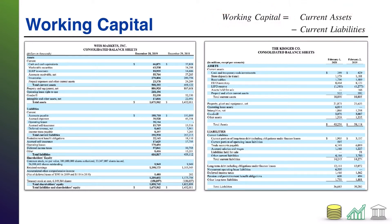So you see the formula over here: current assets minus current liabilities, and that's going to give us our working capital. The name working capital is essentially a way of saying: after you've paid off the debts you expect to come due in the next year, how much value do you have left to essentially work with to help do something different with the business?